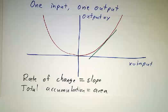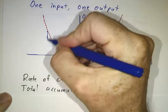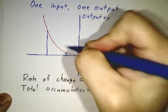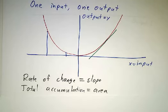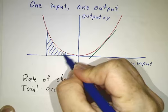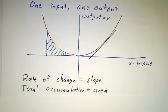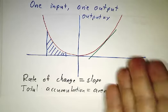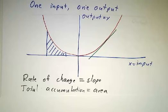And if you want to know the total amount of stuff, that things were accumulating at a rate of x squared, and you want to know the total amount of stuff, that's the area under the curve. And we compute that using an integral. So geometry helps us understand plain old scalar functions.